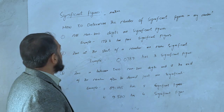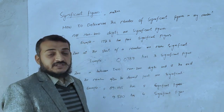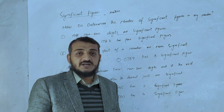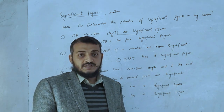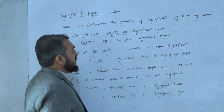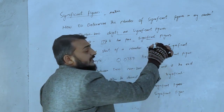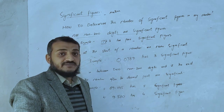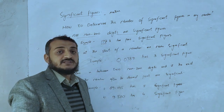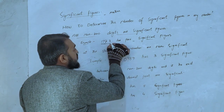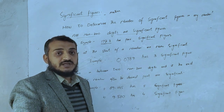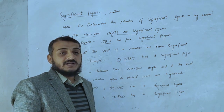The first rule is: all non-zero digits are significant. For example, 172.3 has 4 significant figures — the digits 1, 7, 2, and 3. So the rule is to count all non-zero digits.